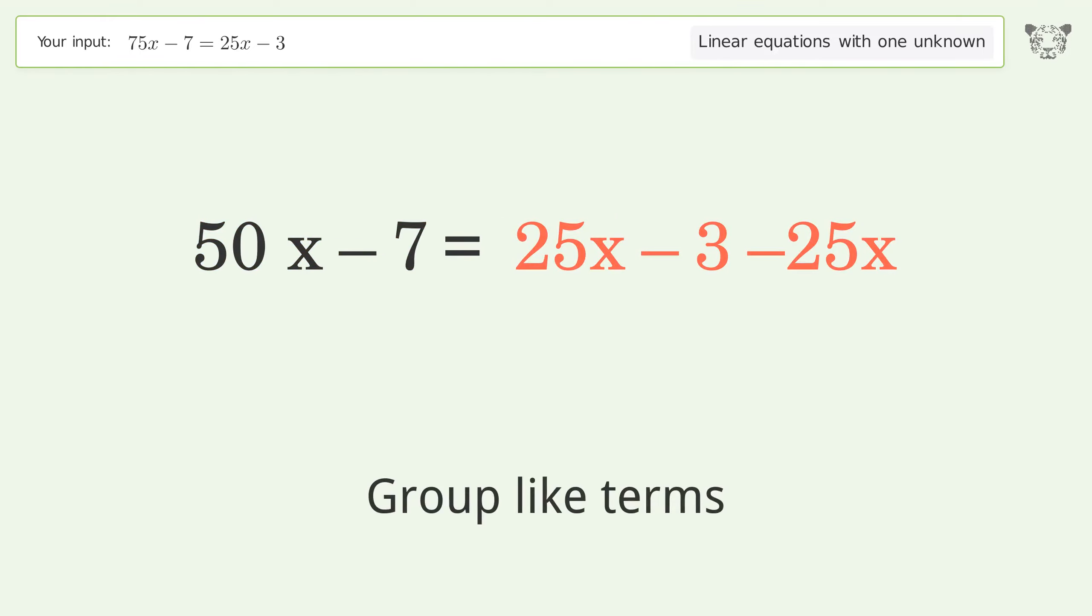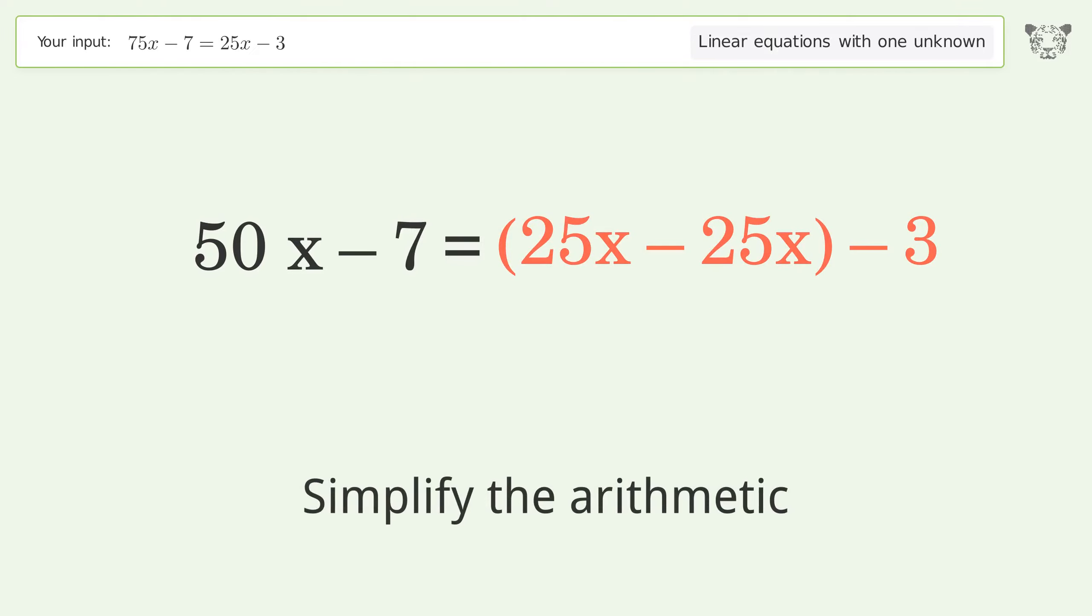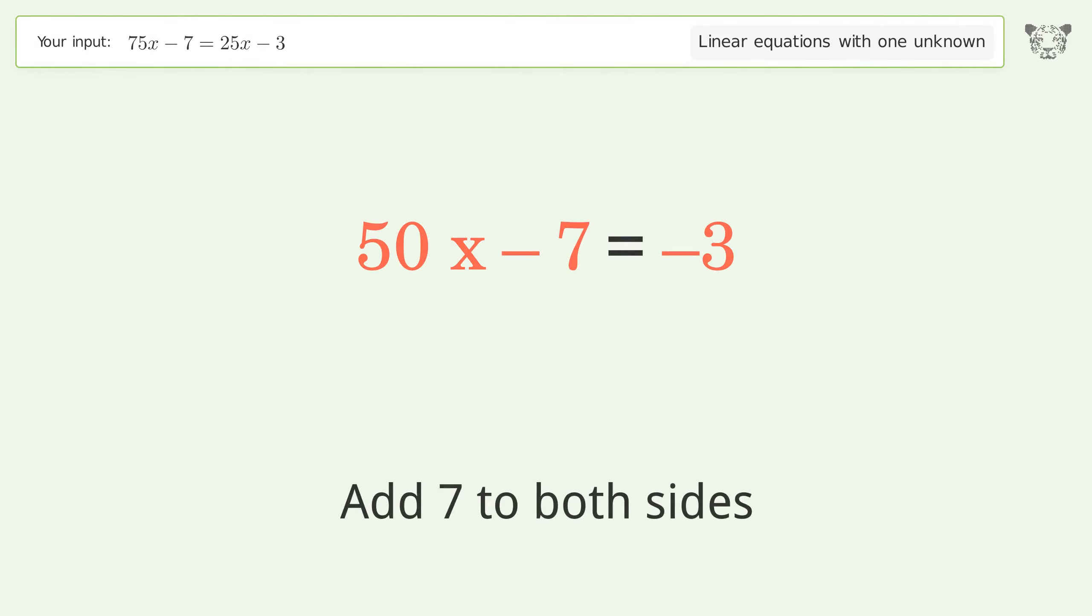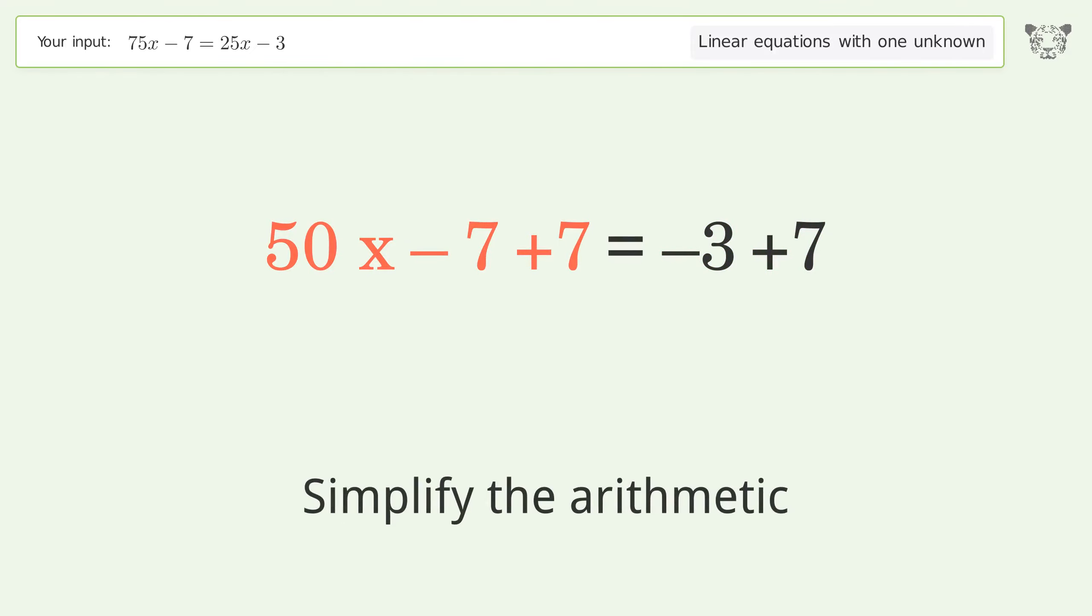Group like terms. Simplify the arithmetic. Group all constants on the right side of the equation. Add 7 to both sides. Simplify the arithmetic.